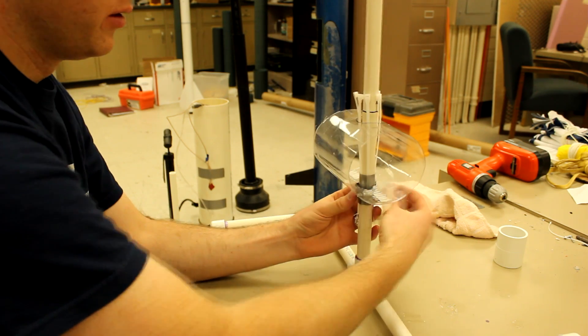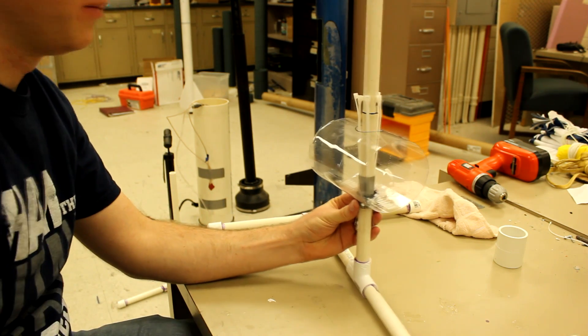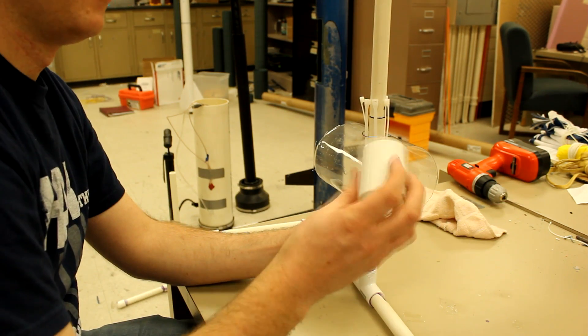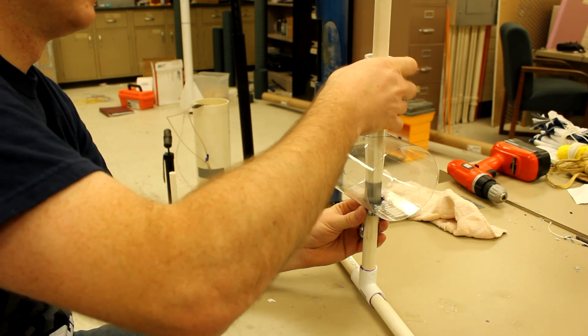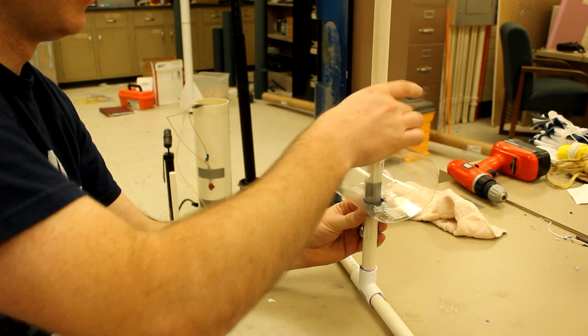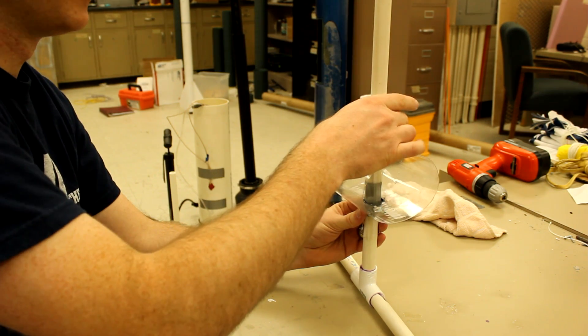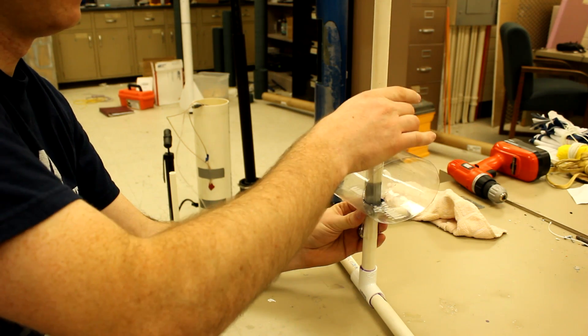This fitting, which is the release mechanism, will slip over top. And this spring will keep it up in a safe position holding the rocket onto the launch rail until we pull it down. So I'll go ahead and fasten this band clamp.